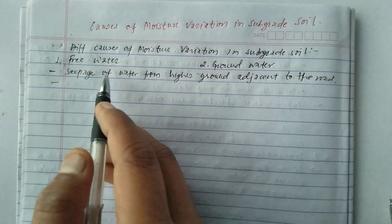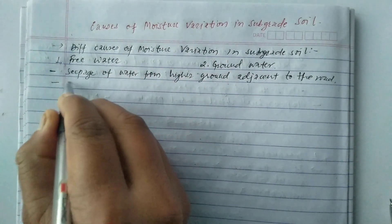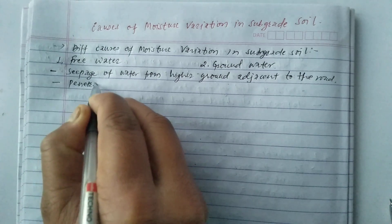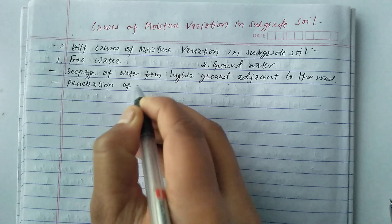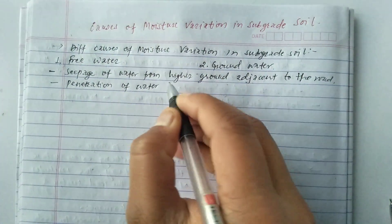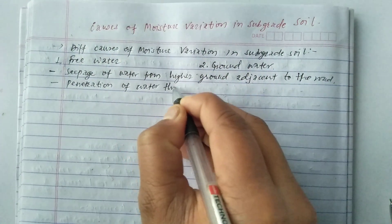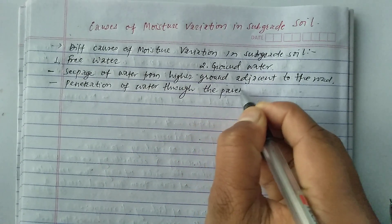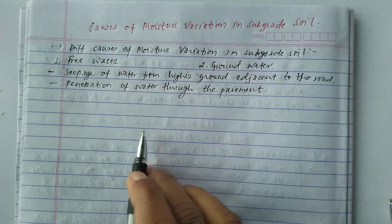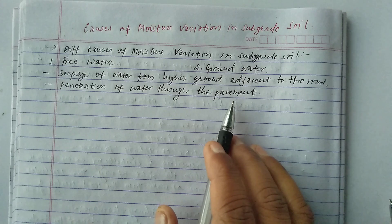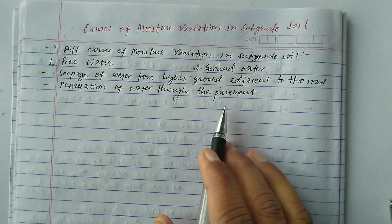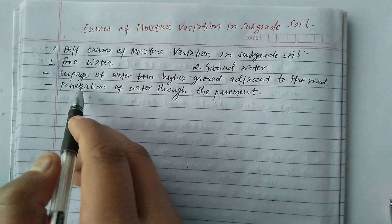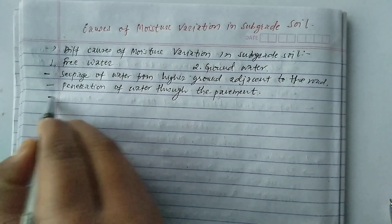The next cause under free water is the penetration of water through the pavement. The moisture variation in the subgrade soil is caused by water penetrating through the pavement surface. This is the second cause under free water.